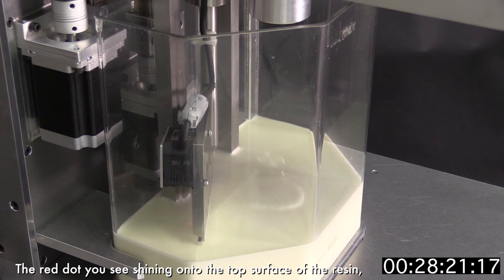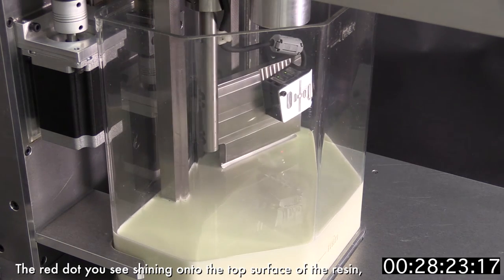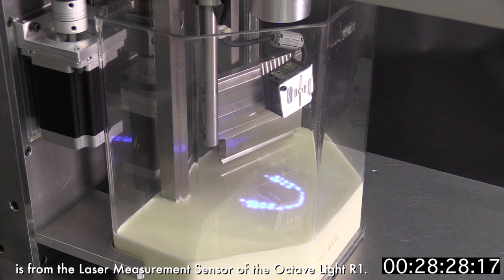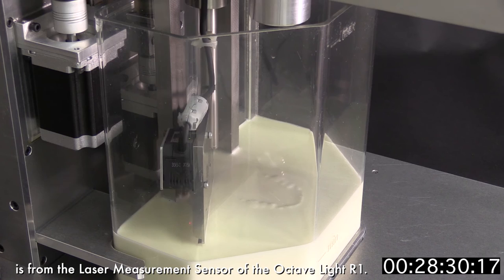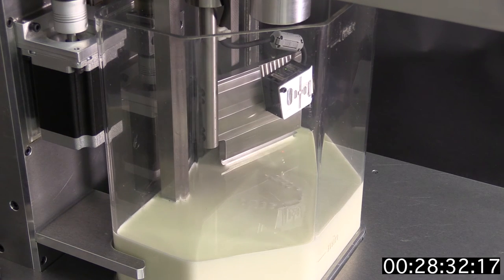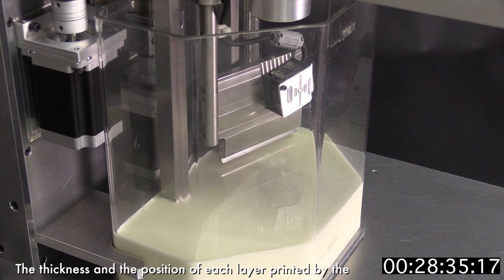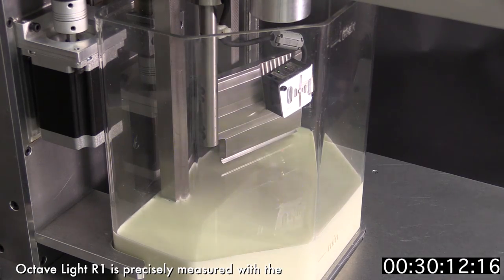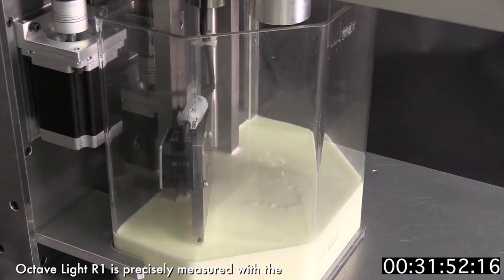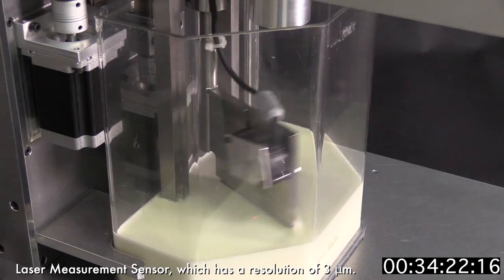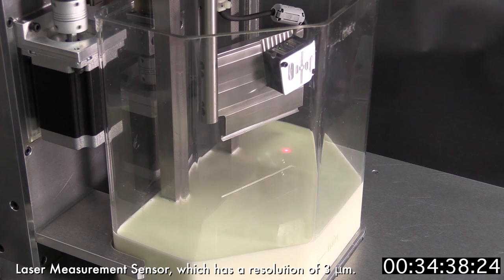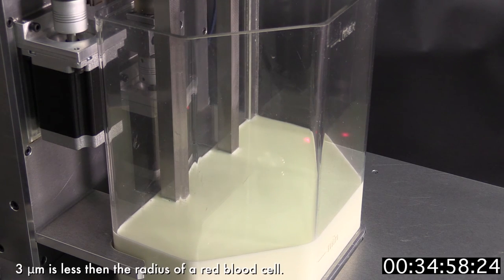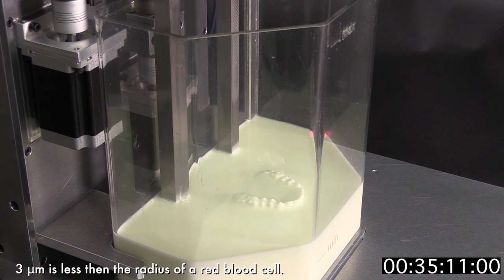The red dots you see shining onto the top surface of the resin are from the laser measurement sensor of the Octav Light R1. The thickness and the position of each layer printed by the Octav Light R1 is precisely measured with the laser measurement sensor, which has a resolution of three micrometers. Three micrometers is less than the radius of a red blood cell.